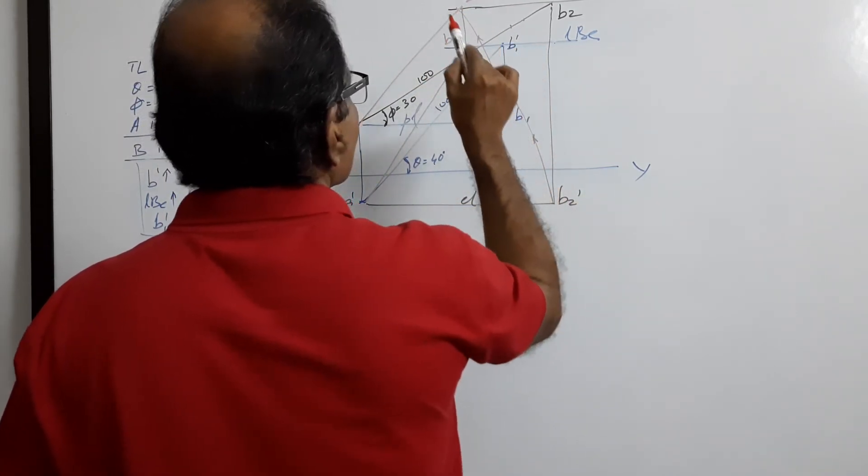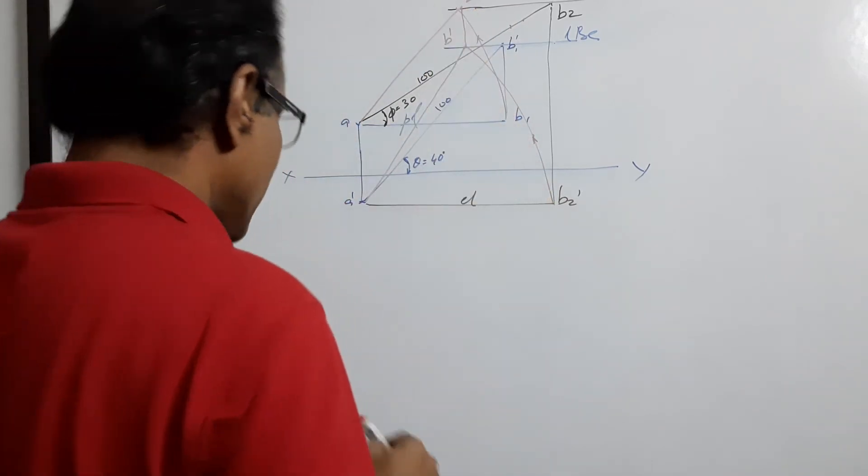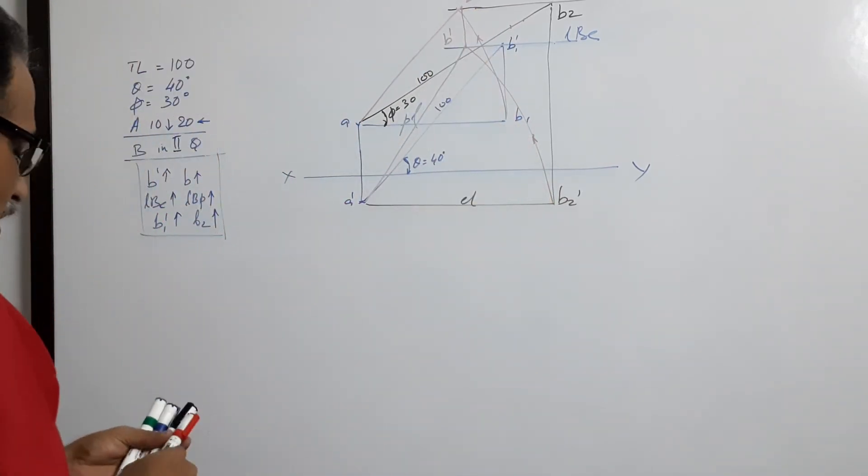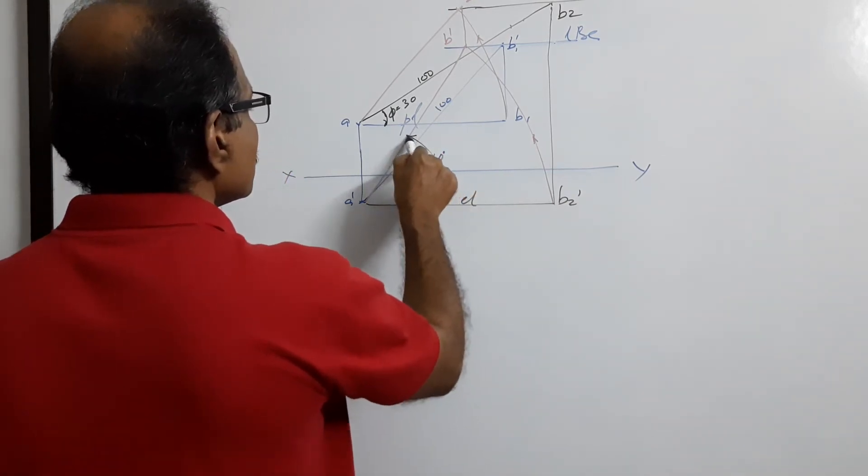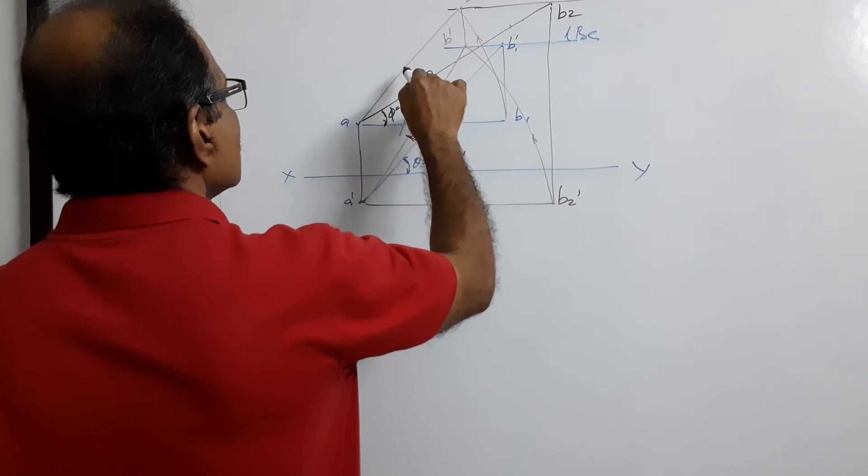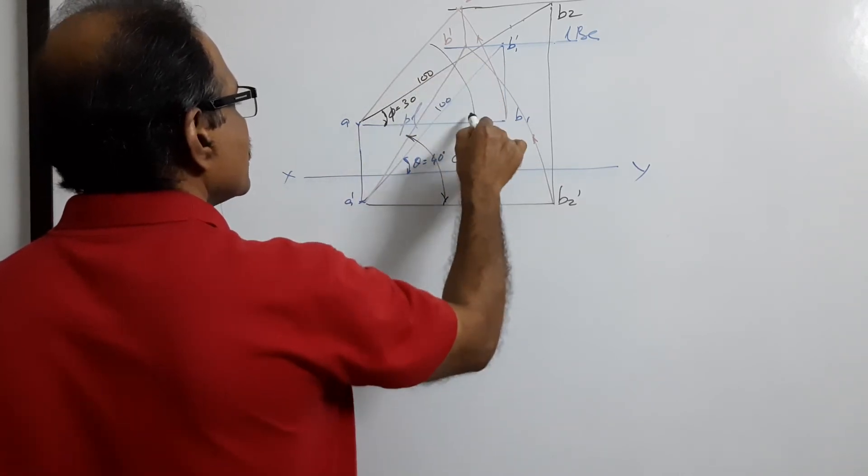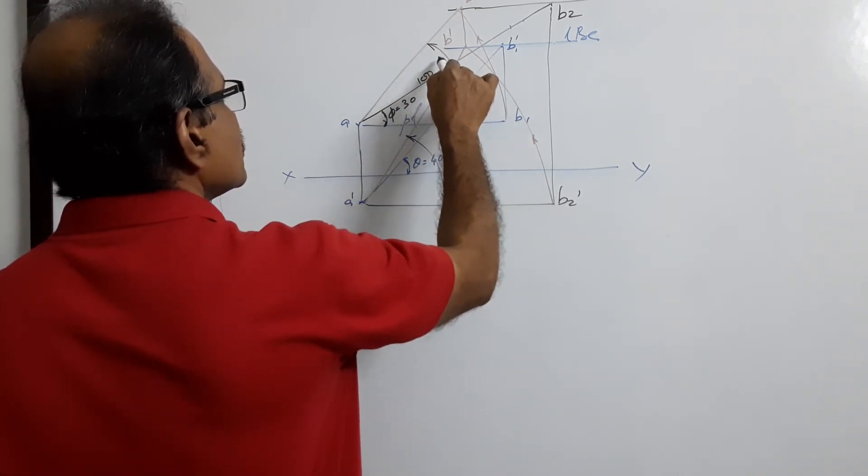After drawing them, if you connect them by a projector, you see they lie on the vertical projector. This is alpha. This is beta.